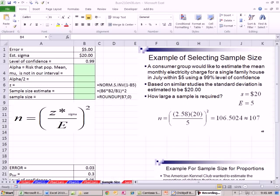Now let's go over to Excel. We're over here on the sample size sheet. Here's our first example. A consumer group would like to estimate the mean monthly electricity charge for a single family house in July within $5 using a 99% level of confidence.